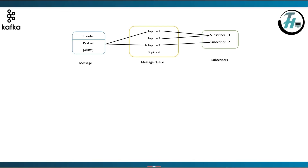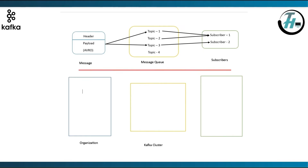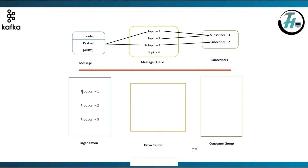Now let's see the big picture. In a real-life example, to make it work, we need three components: organization, Kafka cluster and a consumer group. Organization is nothing but the client application that publishes events to Kafka, that is the one sending the messages, which is called the producer. Here I have taken three producers: producer 1, producer 2 and producer 3.